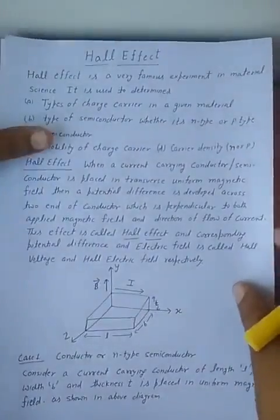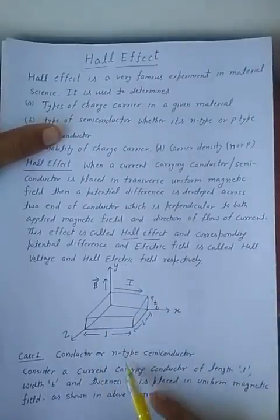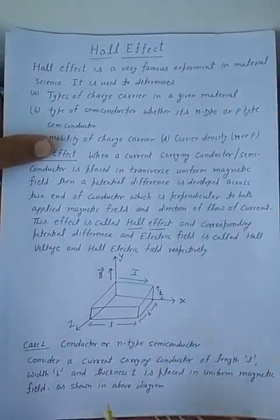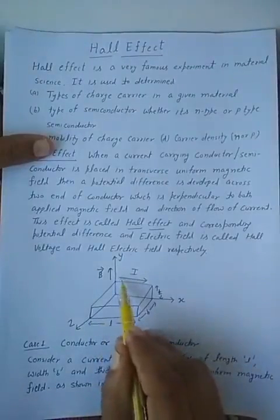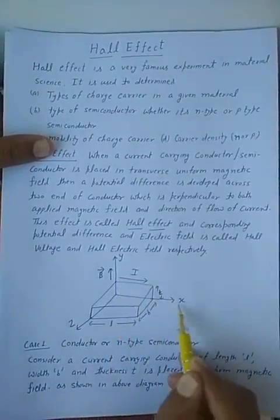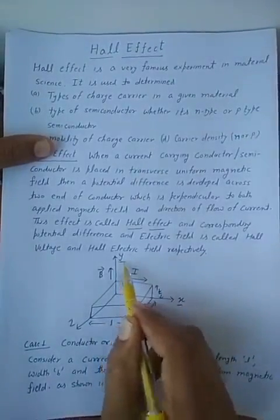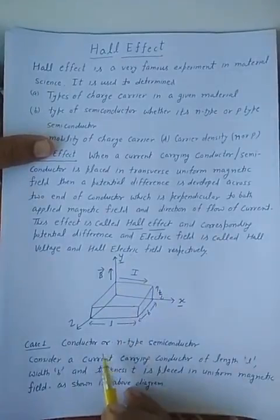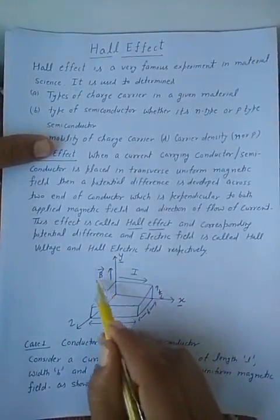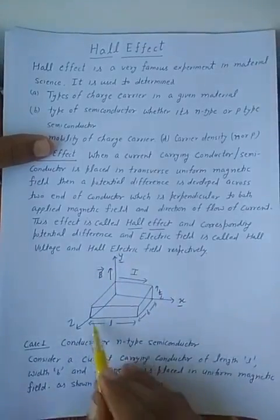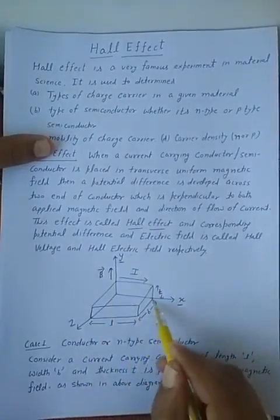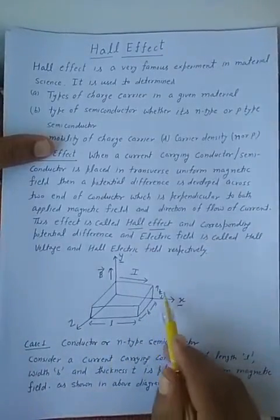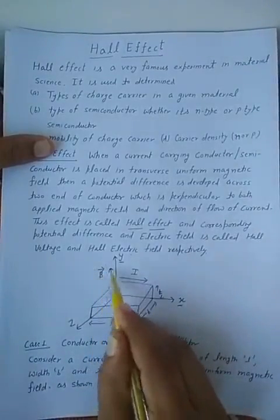Now, because of this diagram, let us consider a sample of conductor or n-type semiconductor whose current is flowing along the x-direction. We assume x-direction for length, y-direction for width, and z-direction for thickness. The current is flowing along the x-direction and the applied magnetic field is along the y-direction. The sample has length l, width b, and thickness t, and is placed in a uniform magnetic field.